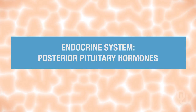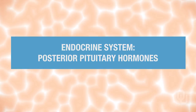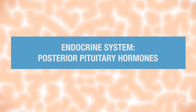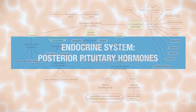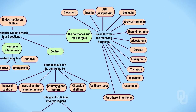In this segment of the endocrine system, we are going to be focusing on the posterior pituitary and the hormones associated with that gland. This segment focuses on two different hormones: ADH, which is also called vasopressin, and oxytocin. Both of these hormones are associated with the posterior pituitary.